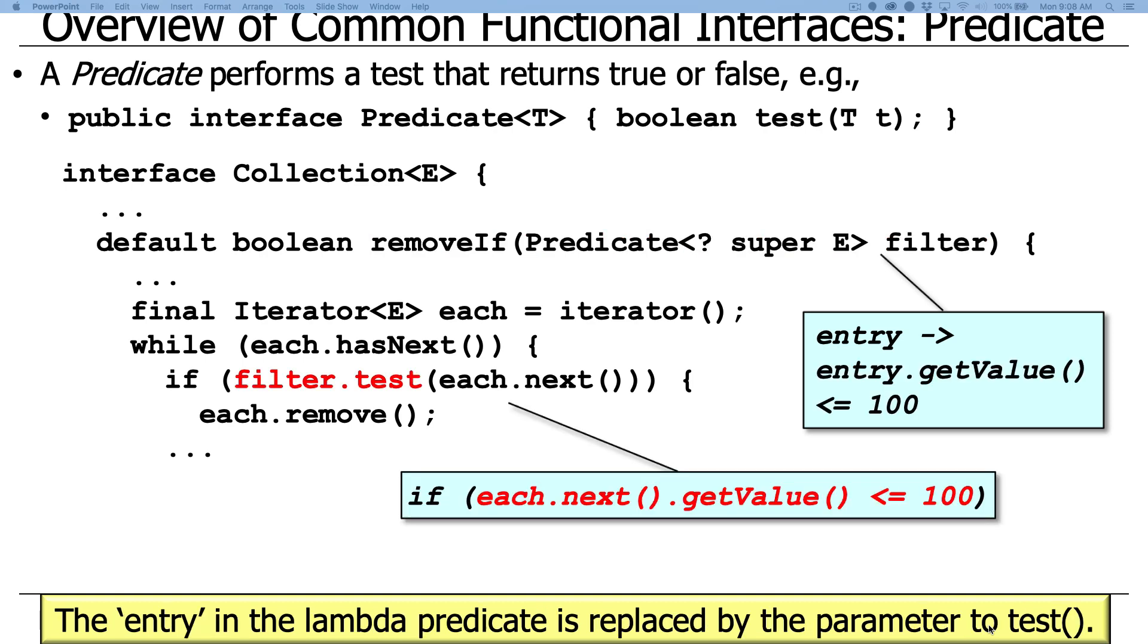And if you look in terms of the implementation of this stuff, you can see that what happens here is that what it's going to do is it's going to, the implementation is going to say filter dot test, because remember there's a test method that is defined on a predicate, and that test turns into this. If each dot next dot get value less than or equal to 100. So that's actually what the code is that's called at runtime. That's the semantics, the effective semantics of it.